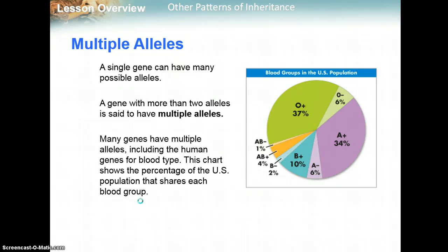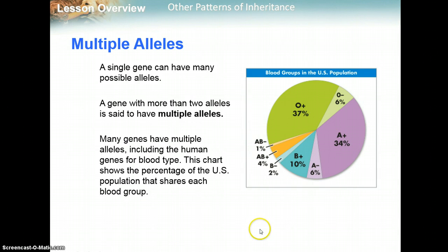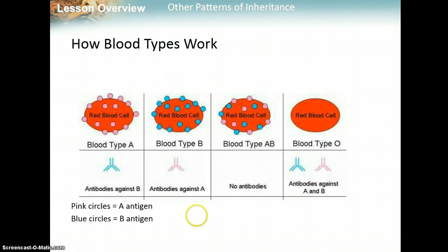You also have multiple alleles. A single gene can have many possible alleles, so a gene with more than two alleles is said to have multiple alleles. Many genes have multiple alleles, including human genes for blood type. This chart shows the general percentage of the population in the U.S. that has each blood group. Blood types are determined by what type of antigen — which is like an ID marker — is on your blood.